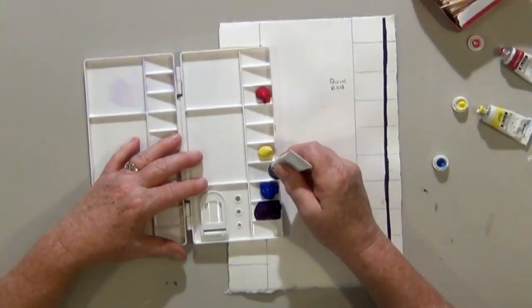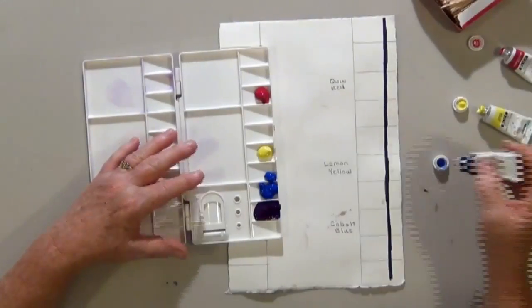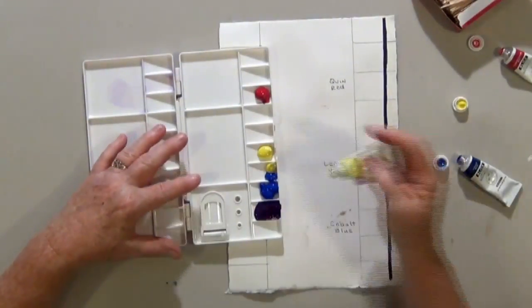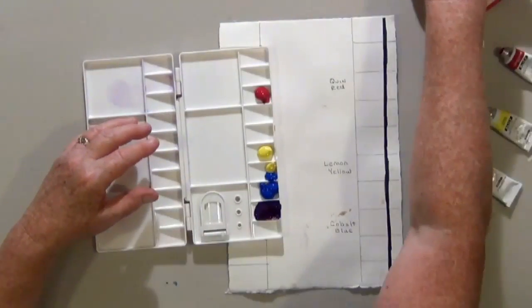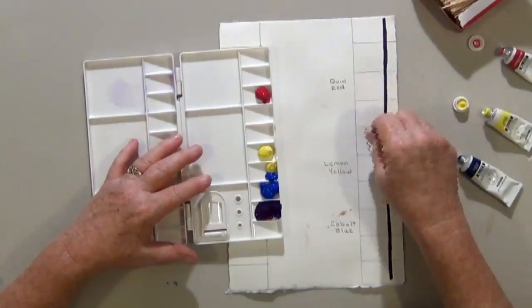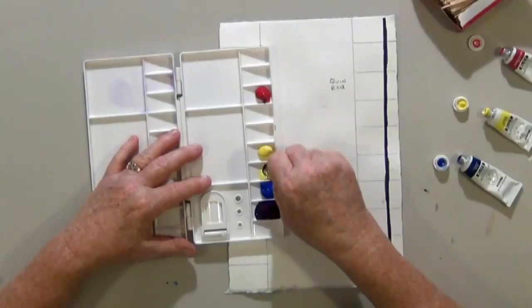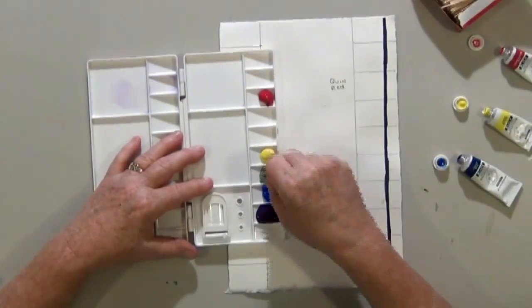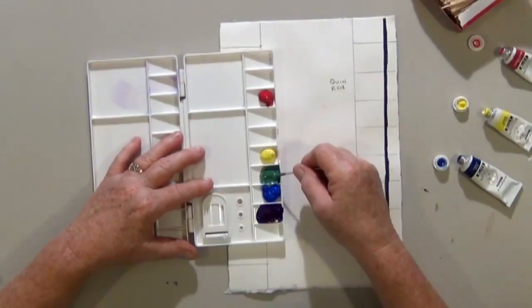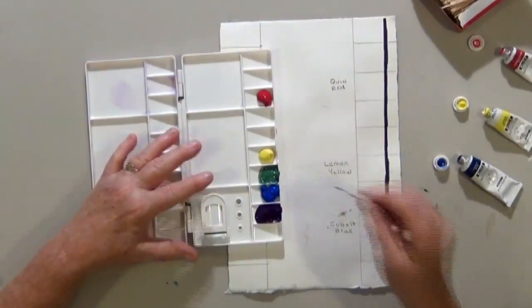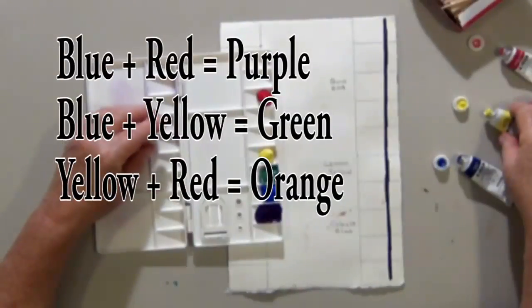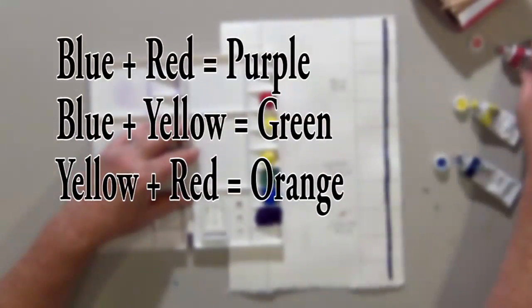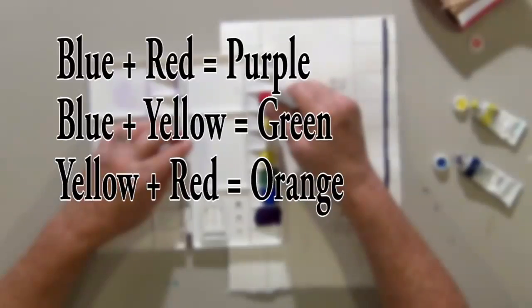Now I'm going to mix half blue and half yellow with another toothpick and create my own green. I think most of you know how to make the secondary colors. That is mixing the primary so that you get orange, purple, and green.